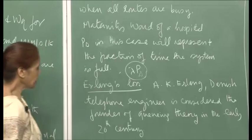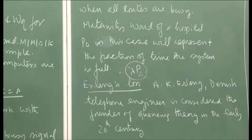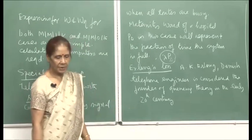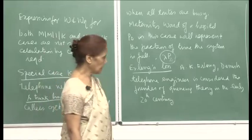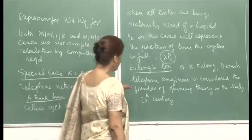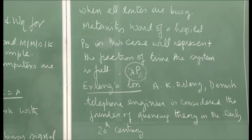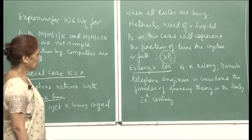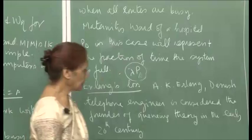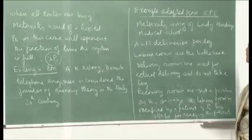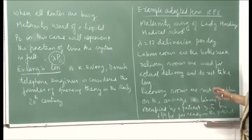This is also called Erlang's law. A.K. Erlang was a Danish telephone engineer considered to be the founder of queuing theory in the early 20th century. It is remarkable how, as a telephone engineer, he laid the foundation for what has now become a fully developed queuing theory.